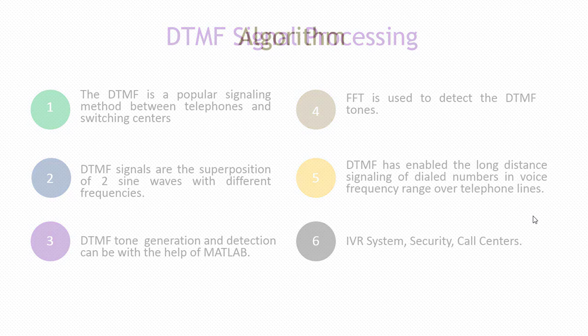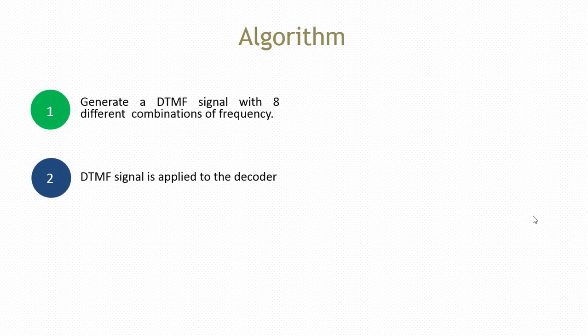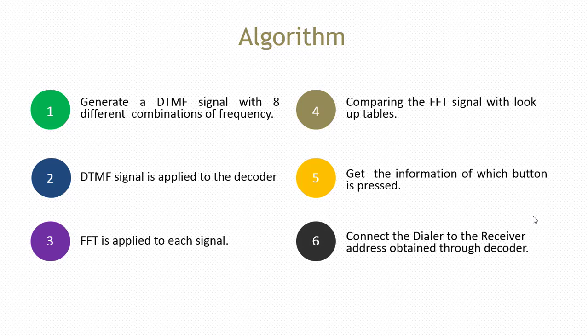Generate a DTMF signal with eight different combinations of frequency. DTMF signal is applied to the decoder. FFT is applied to each signal. Comparing the FFT signal with lookup tables gets the information about which button is pressed. Connect the dialer to the receiver address obtained through the decoder.